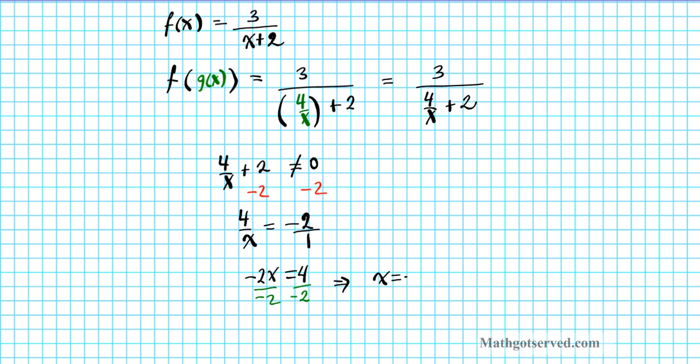X equals negative 2. So this is the second constraint on your domain. So x cannot be negative 2, or else you have zero on the denominator.